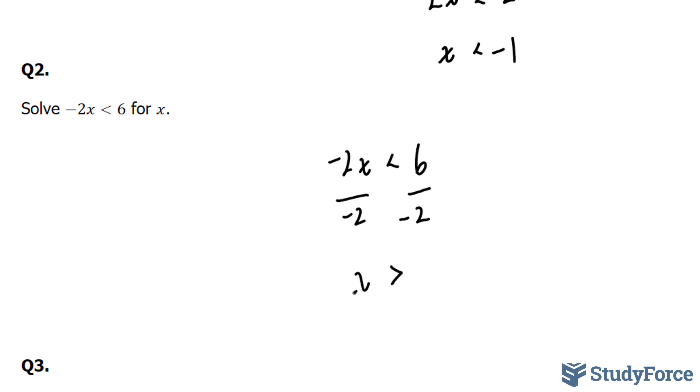And we end up with x is greater than, or has to be greater than, negative 3. So that's one big difference when it comes to solving for inequalities, in the sense that if the number is negative, in which you're dividing by, the inequality changes its sign.